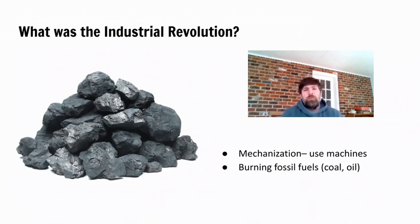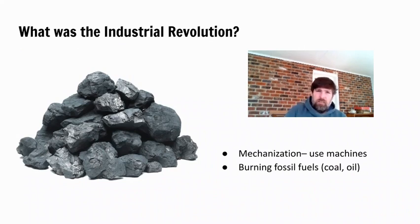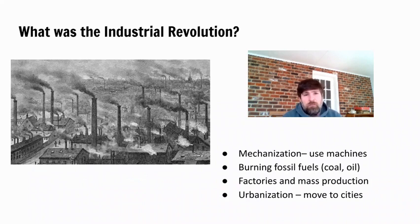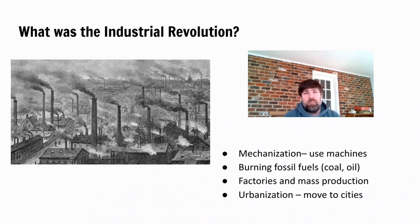Those machines are usually powered by burning fossil fuels — specifically coal and oil — in order to power the machinery used to make all this stuff. Because the machinery is large, it needs to be in a central location. It's not something that can just be in an individual person's house, which is what people used to do — they had what was called a cottage industry, and the tools were small enough to use at home.